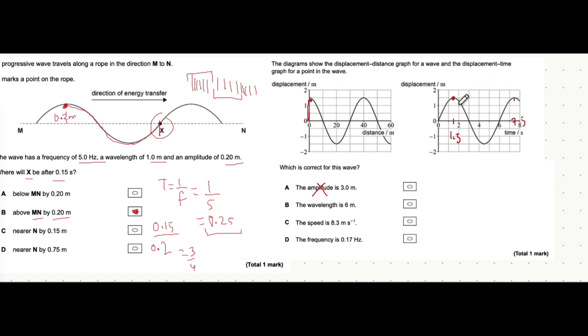What that is actually, that distance between the two peaks, the time between two peaks, that's the time period. Time period equals 6 seconds. Because remember, time period is a time taken for one complete wavelength.